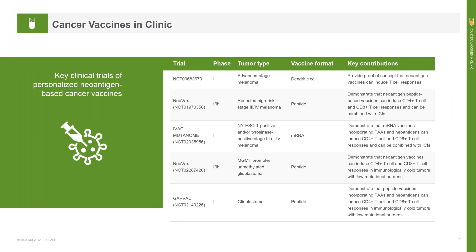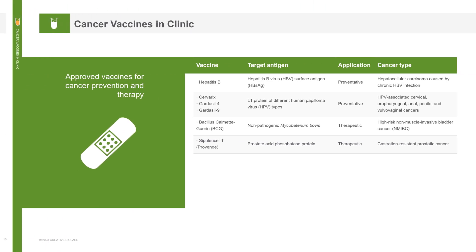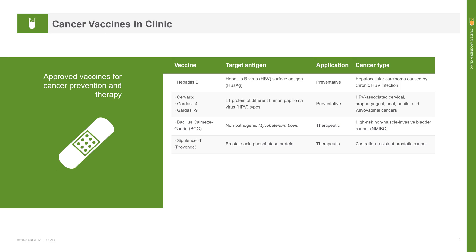This slide reveals the list of selected key clinical trials of personalized neoantigen-based cancer vaccines, including their phase status, tumor type, vaccine formulation, and key contributions. Despite decades of research and development, only a few cancer vaccines have been approved for human use, and several other vaccines are in various phases of clinical trial. The success of these cancer vaccines depends on several factors, including the type of antigens used, the tumor microenvironment, the immune landscape of the tumor, and the different vaccine formulations.